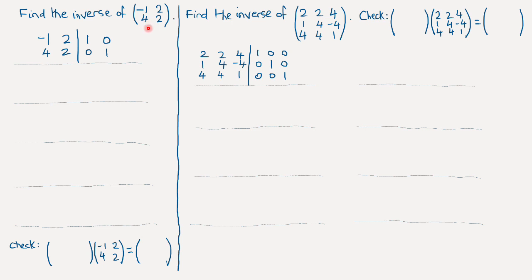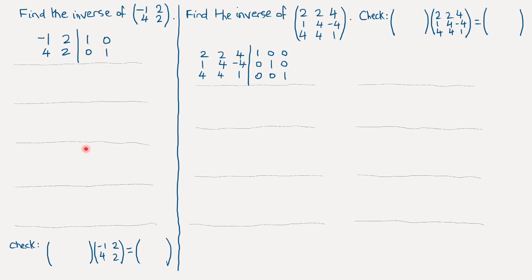So let's find the inverse of this matrix: minus 1, 2, 4, 2. The way we use Gauss-Jordan elimination is to write down the elements of the matrix on the left, draw a line, and write the elements of an identity matrix on the right. Then we perform elementary row operations to change the four elements on the left to an identity matrix, and whatever happens on the right gives us the inverse matrix.